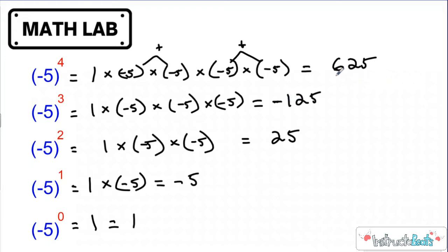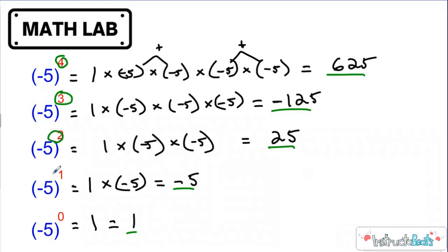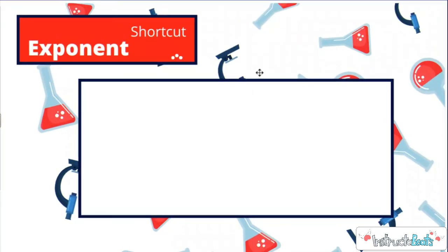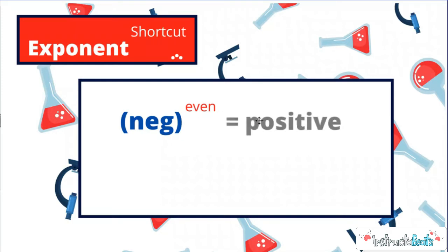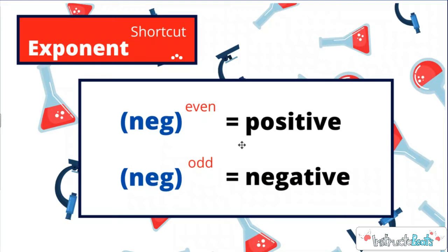I do want to point out a couple of different patterns. If you notice, the signs go positive, negative, positive, negative, positive. And if you look at the exponent, it seems like when I had an even exponent, my answer was positive. When I had an odd exponent, my answer was negative. So even exponent gives positive, odd exponent gives negative — and then of course you have your zero. Let's go ahead and jot that exponent shortcut down: if you have a negative base raised to an even power, that's going to give you a positive standard form. If you have a negative base raised to an odd number, that is always going to give you a negative standard form.